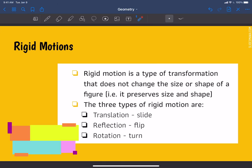So rigid motion, like I said, is a type of transformation that does not change the size or shape of a figure. It preserves size and shape. And three types of rigid motion, which you guys may have heard of, are slides, which is called the translation, a flip, which is a reflection, or a turn, which is a rotation.